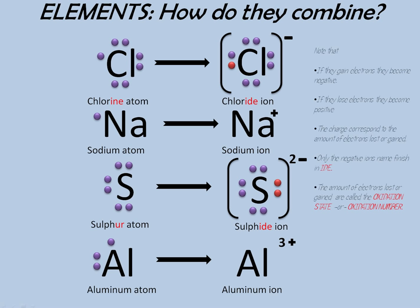Things to remember: if they gain electrons, they become negative ions; if they lose electrons, they become positive ions. The charge corresponds to the number of electrons lost or gained. That charge is also named the oxidation state or oxidation number. Only the negative ions change their name to the ending "-ide" instead of the regular name. The positive ions do not change the name.